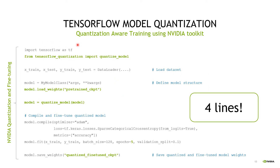In this slide, we see how easy it is to perform quantization-aware training using NVIDIA toolkit by introducing just four lines of code. We load the pre-trained checkpoint of the model and use the quantizeModel function from the toolkit, which transforms the model and introduces QDQ nodes. We then perform fine-tuning of the model for a few epochs and save the final model.